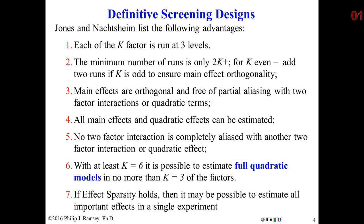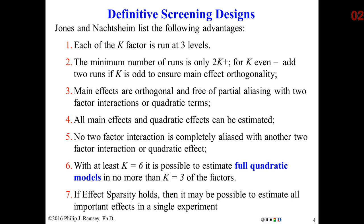The advantages of definitive screening designs are as follows. Each of the K factors is run at three levels — most screening designs are run at two levels. You can create optimal designs in the custom design platform with more levels, but typically continuous factors are run at three levels. You can also have categorical factors, but they can have no more than two levels. The minimum number of runs is two times K plus one when K, the number of factors, is even.